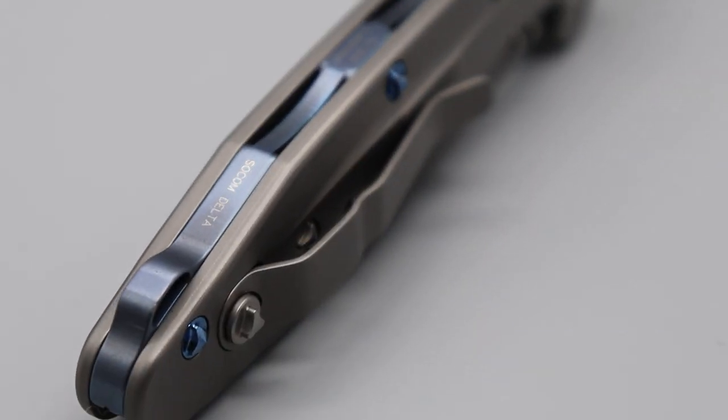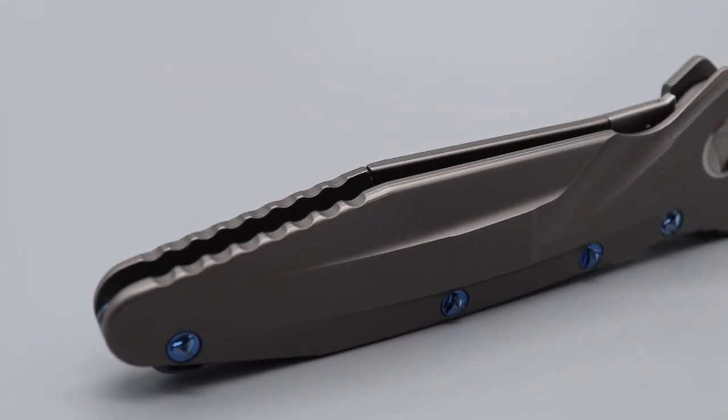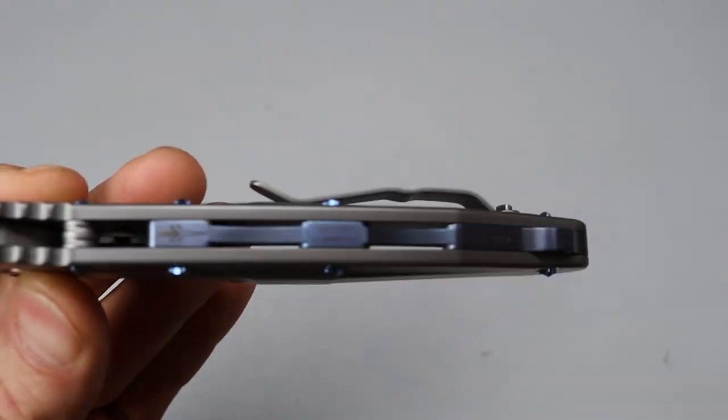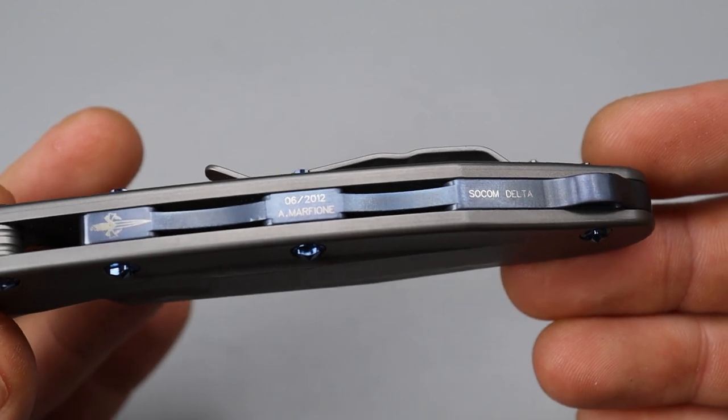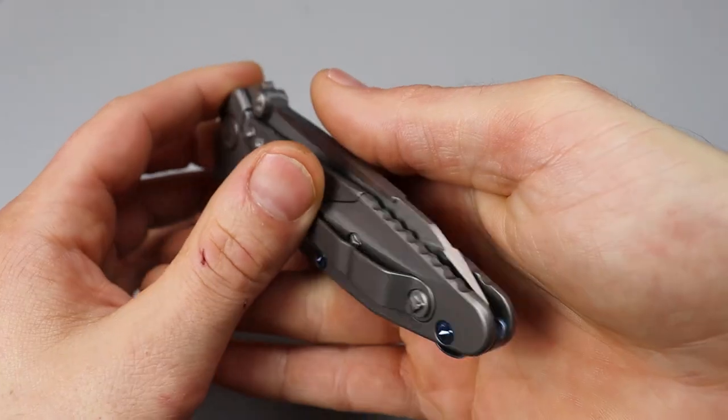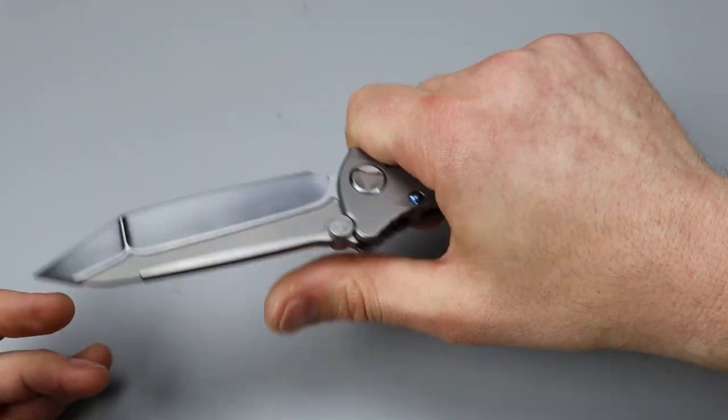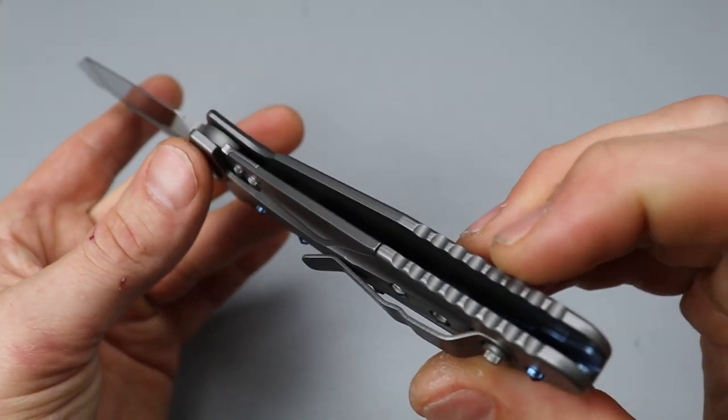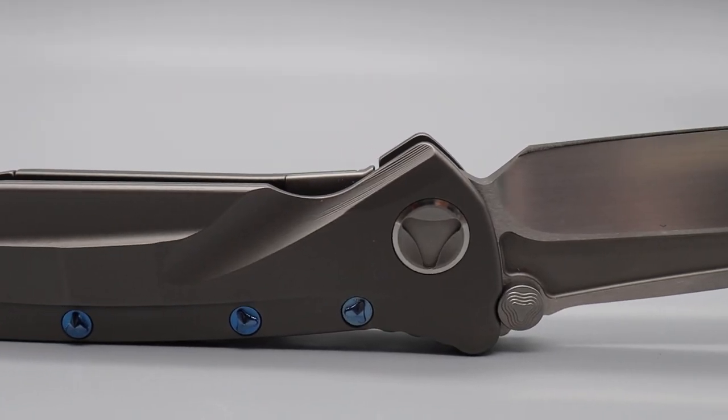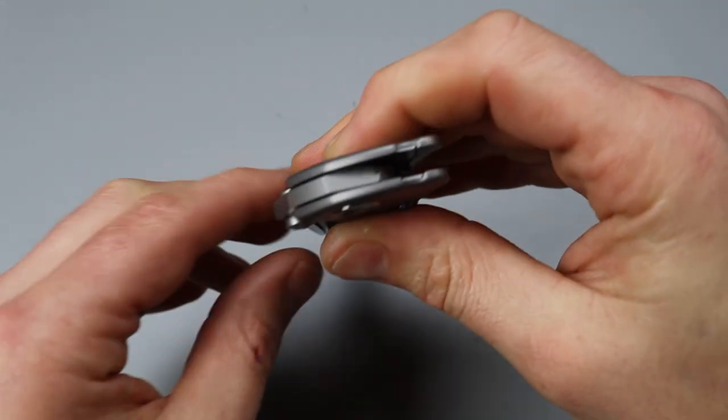Titanium frame lock. I believe the blade steel on this is M390 or 20CV. We have a titanium frame lock with a steel lock bar insert, and you can see their hardware is their own in-house made hardware, so you'd have to have their bits to take it apart. Beautiful backspacer with the Microtech logo and all the information. Marfione Custom. Extremely well done. I love the overbuiltness of it - very comfortable ergonomics. All titanium built with the highest precision. The access to the lock bar very easy to disengage. Very smooth rolling it out. I think this one is on ceramic caged bearings.